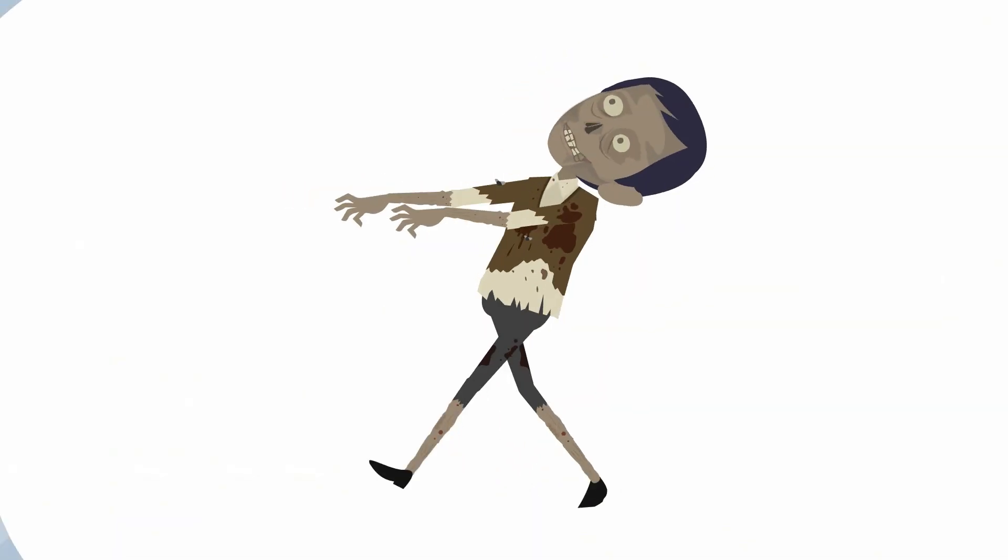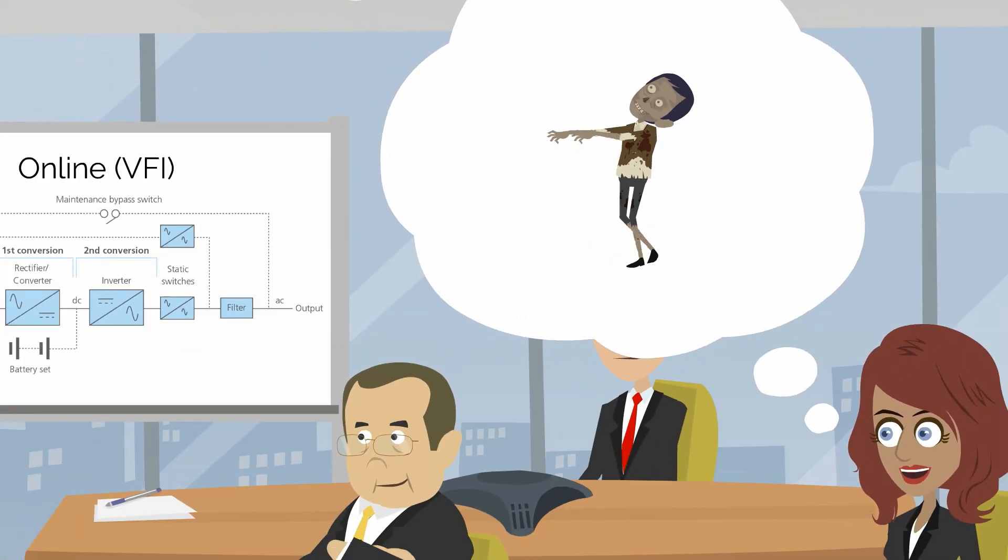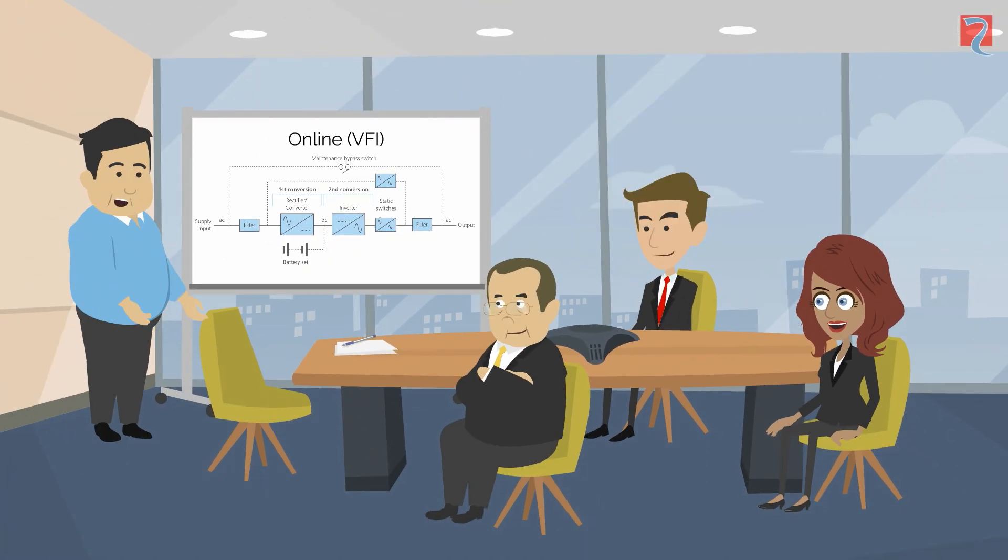Online UPS can typically range from 700VA to multi-MVA systems. This, coupled with their total power protection, makes them the obvious choice for all critical loads.